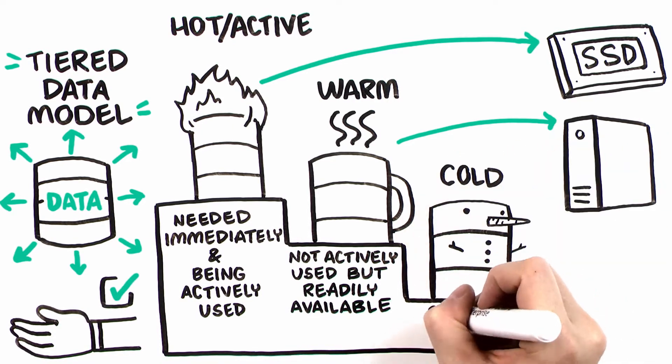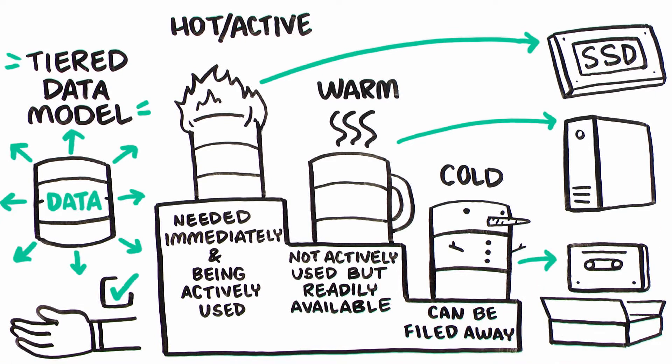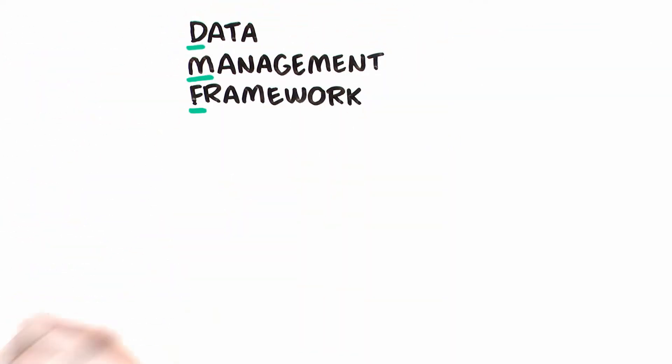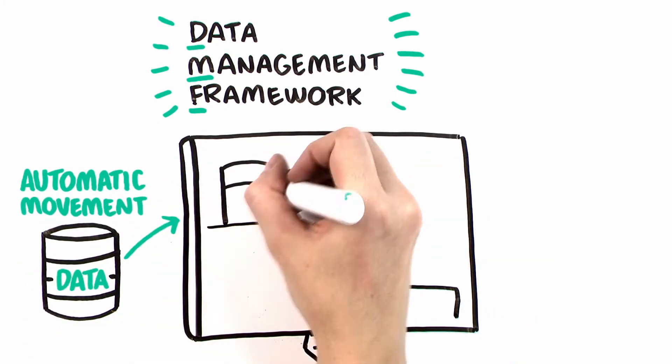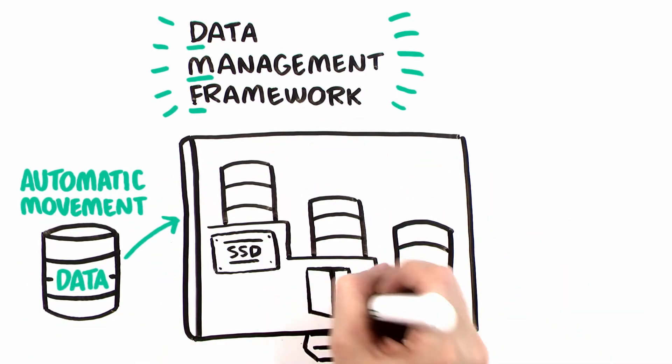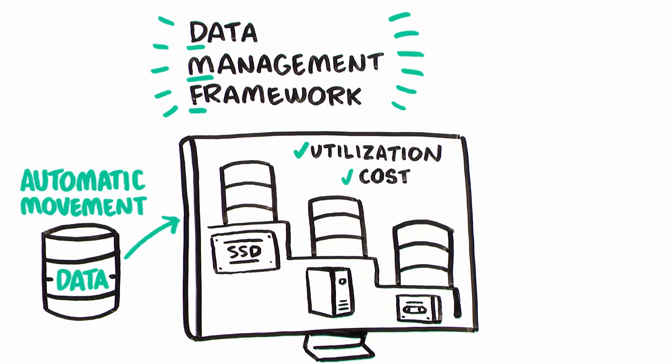The cold tier is for data which can be filed away and archived, typically stored on tape. The HPE Data Management Framework allows automatic movement of data to the right tiers – SSD, hard drives, or tape – for best resource utilization and to reduce cost.